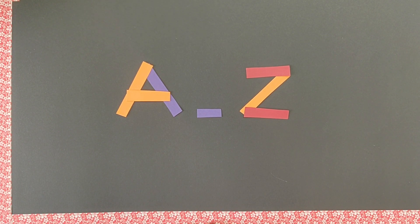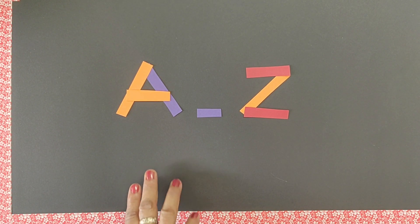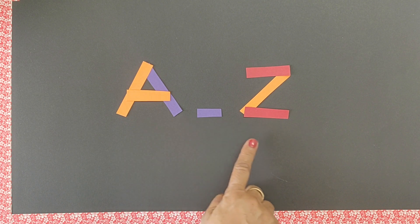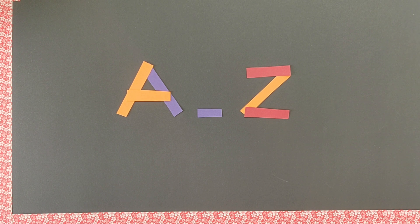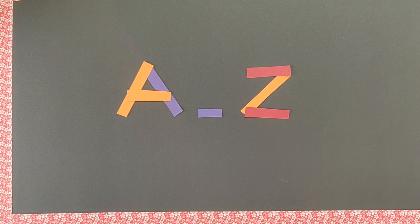So see how easily in a play way method we have completed our alphabets A to Z. This type of activity I will be regularly posting in my channel. If you are interested please go through it, subscribe it and like it. Thank you.